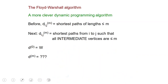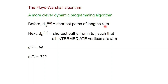However, there exists another algorithm which is even more clever and which gets you just plain V cubed running time, and this is known as the Floyd-Warshall algorithm. The Floyd-Warshall algorithm is a more clever dynamic programming algorithm. Before, our subproblems were the matrices D superscript M, the shortest paths of length at most M. Now we are going to change the subproblems in a somewhat unnatural way.